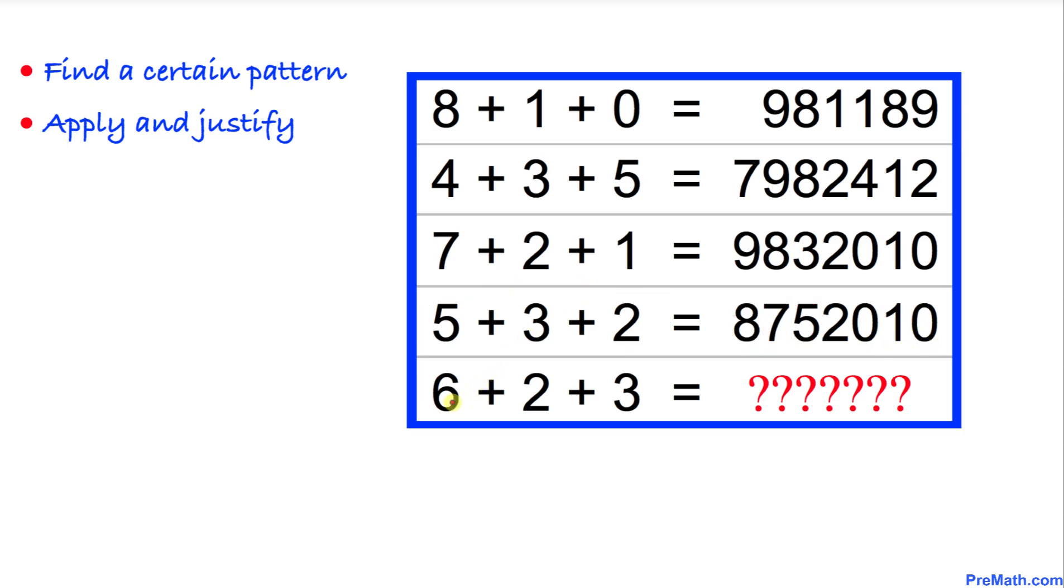Now finally, let's focus on our last row. We are going to apply the very same rule. Six plus two is going to give us eight, six plus three is going to give us nine, and two plus three is going to give us five.